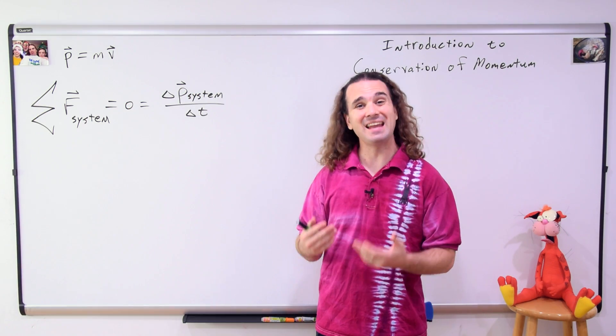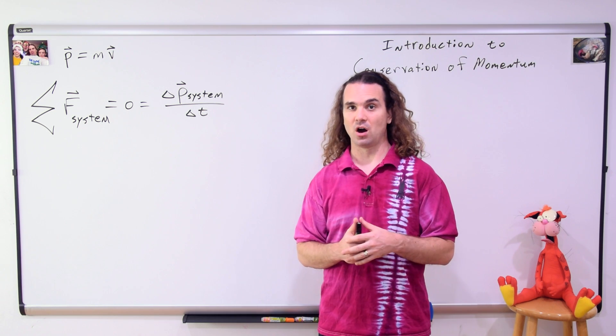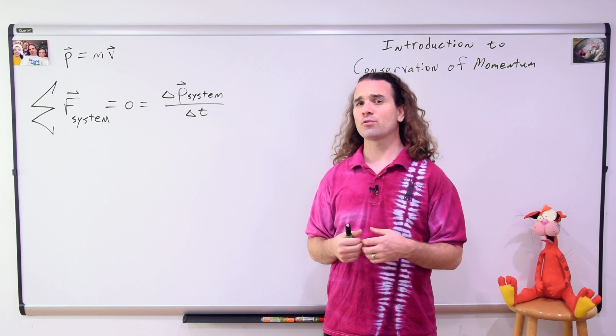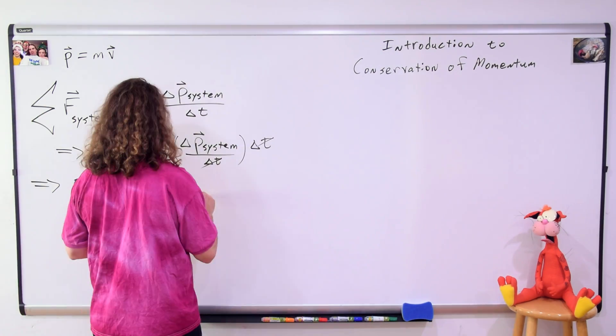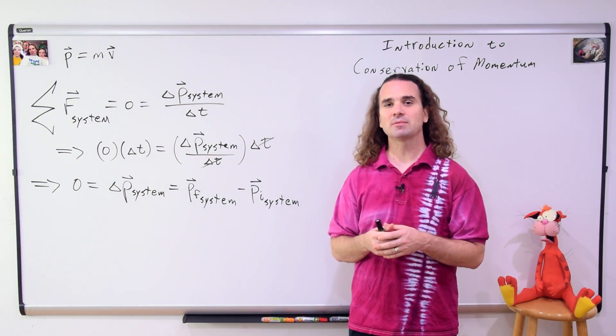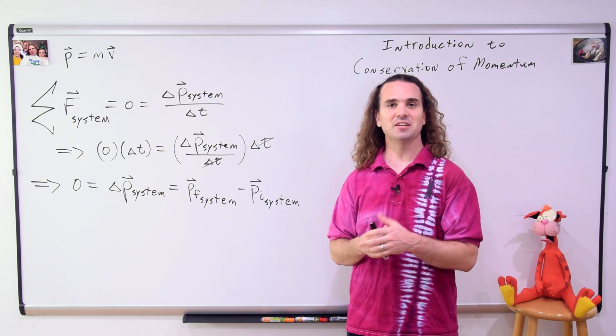And we know net force equals change in momentum over change in time, where both force and momentum are vectors. And multiplying through by change in time gives us the change in momentum of the system equals zero and delta or change in always equals final minus initial.